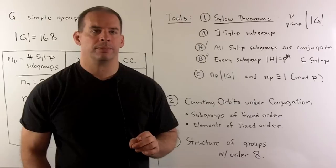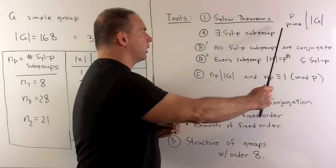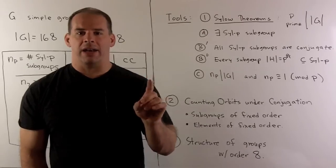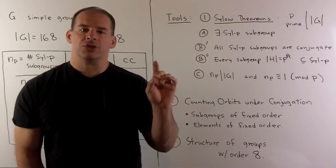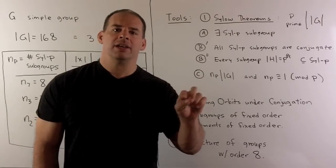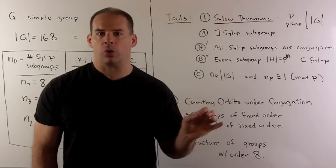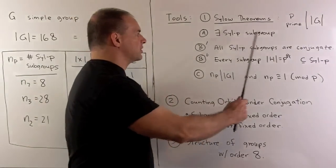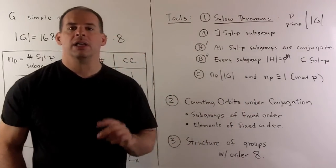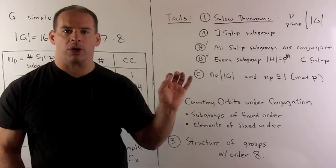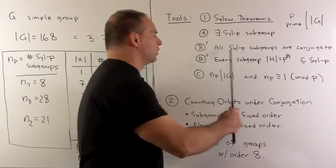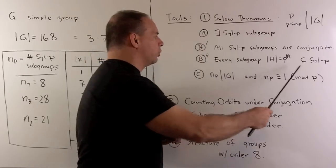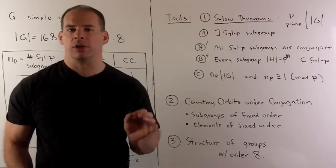Now, we have three main tools. First, we have the Sylow theorems. So, P is a prime that divides the order of our group. Then, a Sylow P subgroup is going to be a subgroup of order P to the highest power that divides the order of our group. First, Sylow theorem states there exists a Sylow P subgroup. Second, Sylow theorem. I'll just state the consequences that we're going to use. All Sylow P subgroups are conjugate, and every subgroup of order P to a power is contained in some Sylow P subgroup.